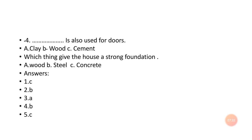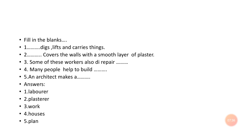Now we'll talk about filling the blanks of this chapter. Number one: blank digs, lifts, and carries things — the answer is laborer. Number two: blank covers the walls with a smooth layer of plaster. After the brick layer makes the wall with bricks and cement, the person who covers it with a smooth layer of plaster is the plasterer.